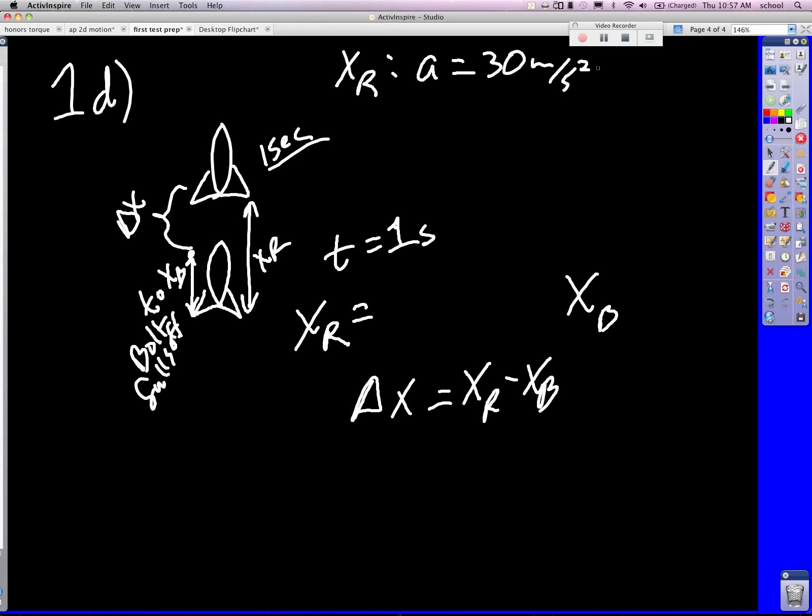So let's talk about the bolt. What is the acceleration of the bolt? Negative 10, good, because of gravity. What is the initial velocity of the bolt? Right, because it just fell off the rocket. And then we have T of one second. It's like the same stuff, just a different acceleration.